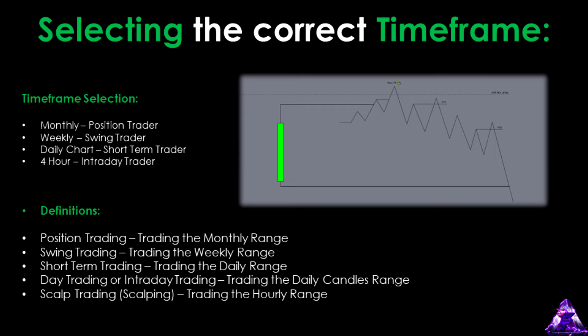Another key time frame is the weekly chart, which is mainly used for swing trading, where trades may form once or twice a month based on weekly ranges. Even as an intraday trader, we can still use the weekly time frame to refine our bias and identify draw on liquidity on the higher time frame. Using a top-down approach, we start by analysing the monthly time frame, then refine our view on the weekly chart.